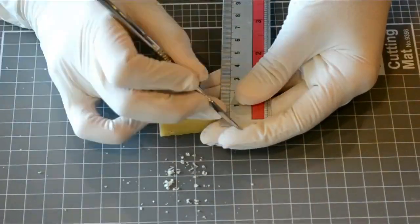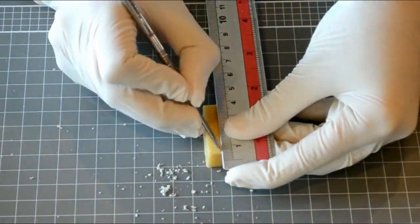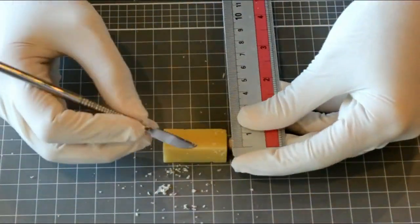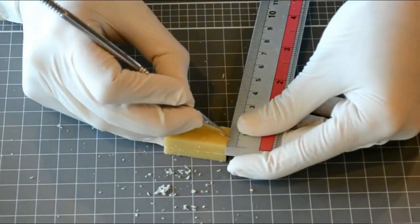Next, carve a vertical line at the center of each aspect using your lecron carver. This will help you accurately plot your measurements on the wax block.